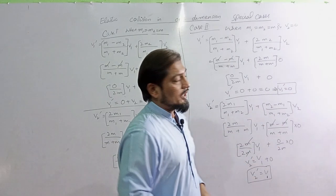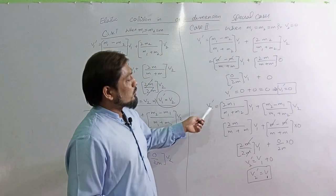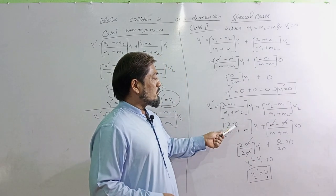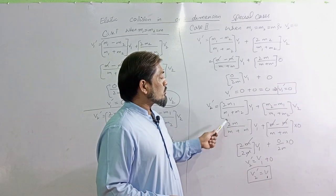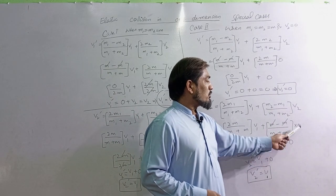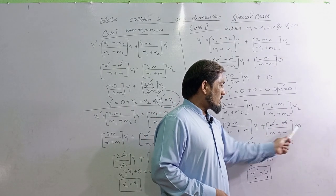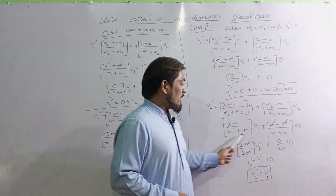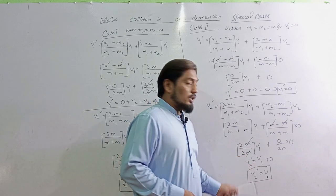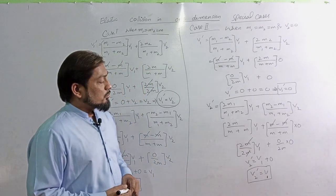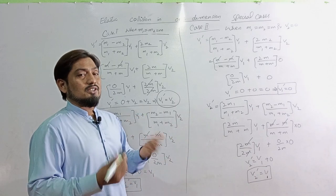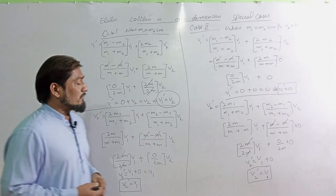For V2', we have 2M divided by M plus M times V1 plus M minus M divided by M plus M times 0. This equals V1. So V2' equals V1. The first ball stops and the second ball moves with the first ball's velocity. The velocities interchange.